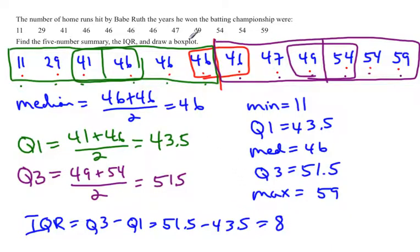Now the last thing to do is to draw a box plot. So the box plot involves these five numbers, so we want to remember what those five numbers are. And we're going to go do the box plot.